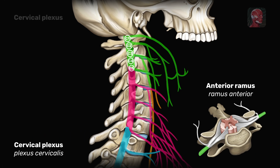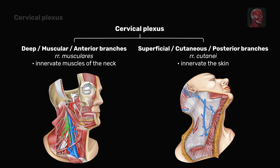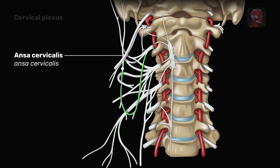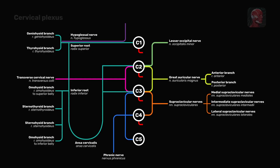Here is a quick summary. The cervical plexus is formed by the anterior rami of the upper four cervical spinal nerves, C1 to C4, and has two types of branches: sensory and motor. The sensory branches include the lesser occipital nerve, the great auricular nerve, the transverse cervical nerve, and the supraclavicular nerves. The motor branches are represented by the ansa cervicalis, the phrenic nerve, and several smaller muscular branches.